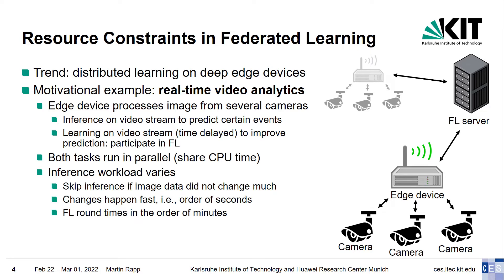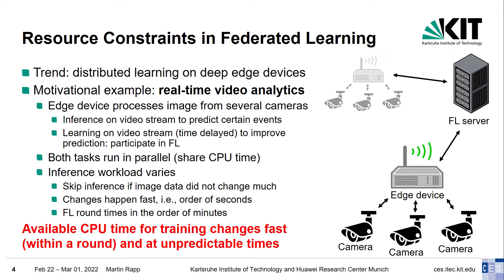Inference and training run in parallel and therefore compete for the same underlying computational resources, most prominently the CPU time. The real-time inference has a higher priority, but its workload varies — for instance because inference may be skipped if the input video has barely changed. These workload changes happen fast and at any time, as the input video may change fast, which means in the order of seconds. In contrast, federated learning rounds take several minutes or even hours. The available resources are also not known in advance, as they depend on the input video. In summary, the available CPU time for training varies over time and changes fast and at unpredictable times.